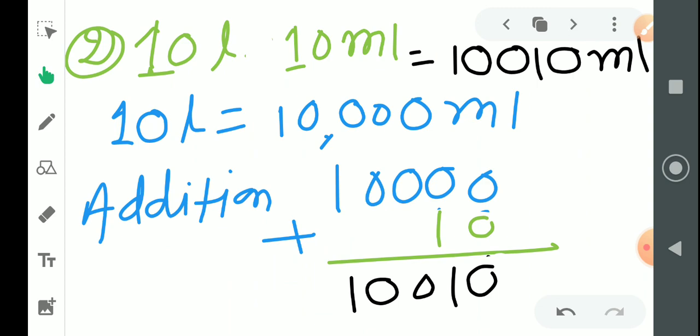10 liter 10 ml. Rule says that multiply liter to the 1000, so 10,000. 10,000.